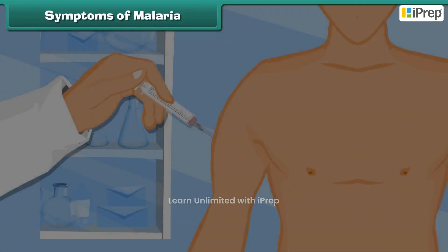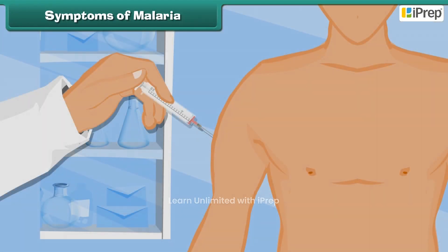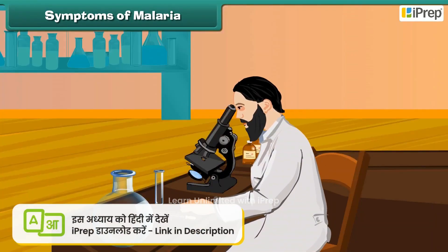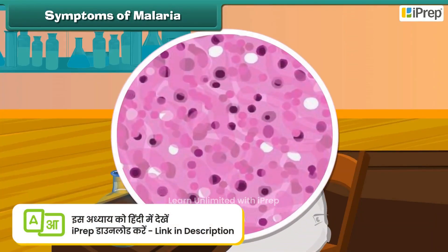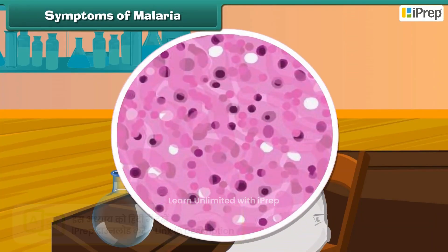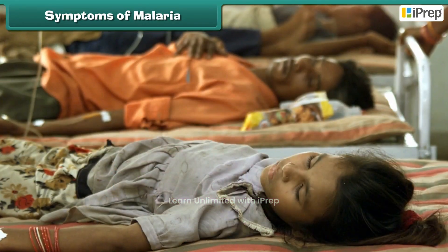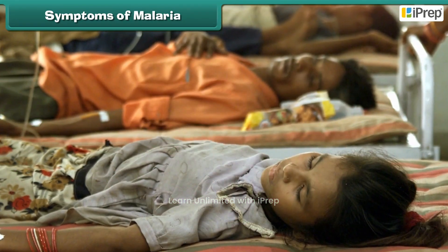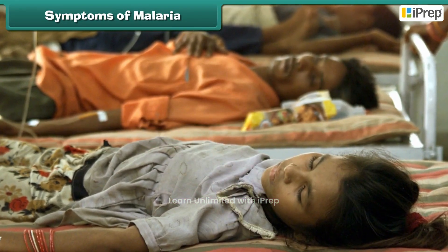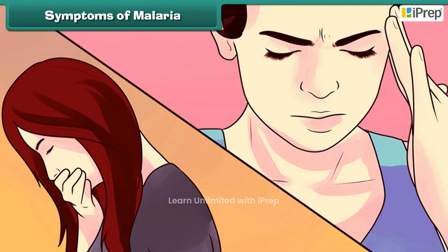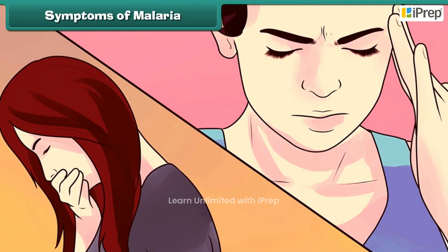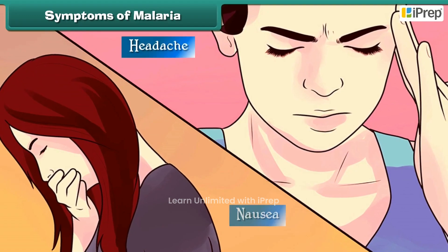Malaria can be confirmed by doing a blood test. A person suffering from malaria suffers from fever with chills and rigours. The person might also have headache and nausea.